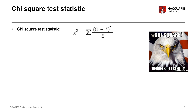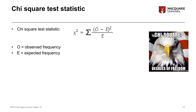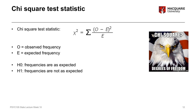The chi-square test statistic formula is: chi-square equals the sum of (O minus E) squared over E, where O equals the observed frequencies — the actual frequencies from our data — and E represents the expected frequencies. Our null hypothesis is that the frequencies are as expected, i.e., no real difference between the observed and expected. The alternate hypothesis is that the frequencies are not as expected. Degrees of freedom equal the number of categories minus one.